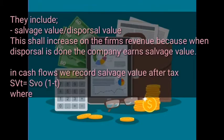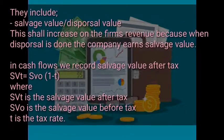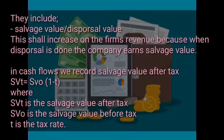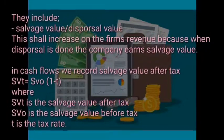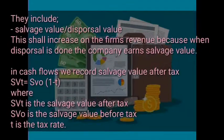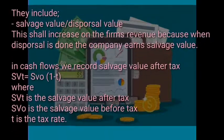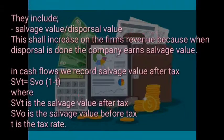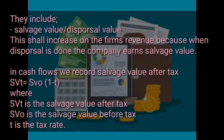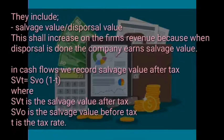In terminal cash flows we have things like salvage value or disposal value, and this increases the value of the firm's revenue because when disposal is done the firm receives salvage value. In cash flows we always record salvage value after tax. The formula for calculating salvage value after tax is: SVT = salvage value before tax × (1 − t), where SVT is the salvage value after tax and t is the tax rate.